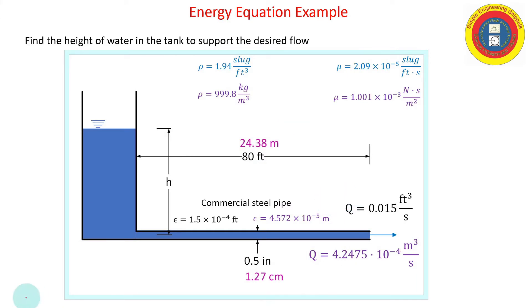Okay, so we have additional data. We have the density, and again you'll note that I'm solving this using British gravitational units and SI. We've got the dynamic viscosity, the volumetric flow rate, it's commercial steel pipe so we can look up the standard roughnesses, and we have the diameter and the length.